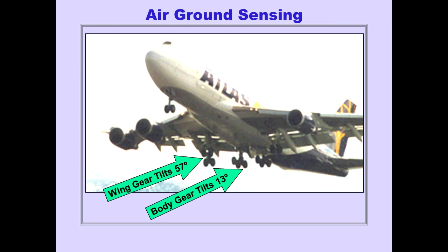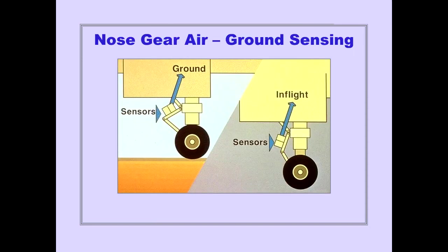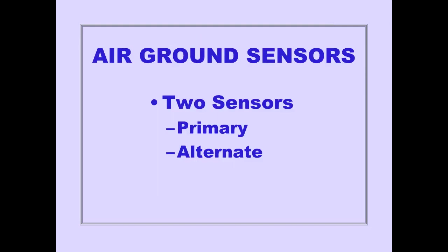The tilt function also provides air-ground sensing for certain airplane systems. Nose gear sensors also provide air-ground sensing for certain airplane systems. With a compressed nose gear strut, the sensors provide a ground mode signal. An extended strut provides an in-flight mode signal. To ensure reliability, each main landing gear and the nose gear have primary and alternate air-ground sensors.